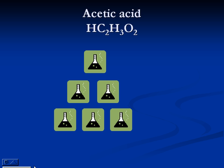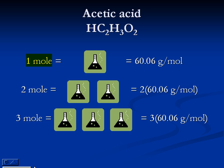This means that the mass of one mole of acetic acid is 60.06 grams. The mass of two moles is two times 60.06 grams, the mass of three moles is three times 60.06 grams, and so on.